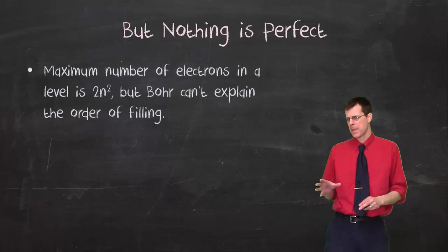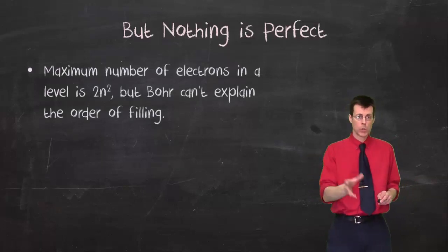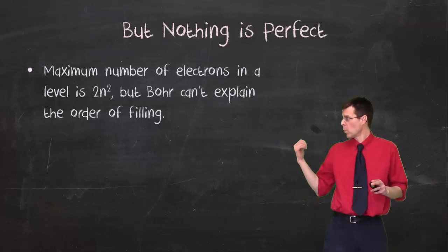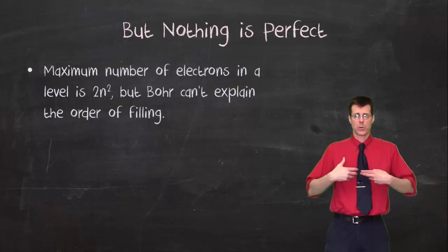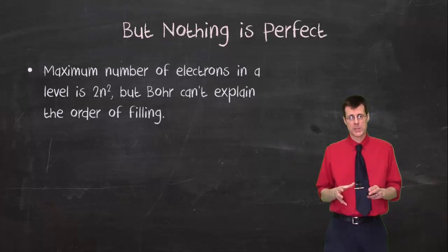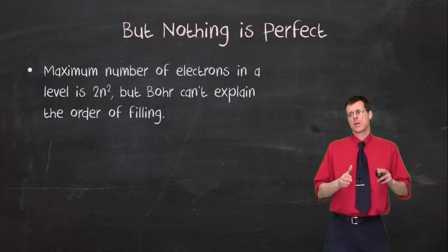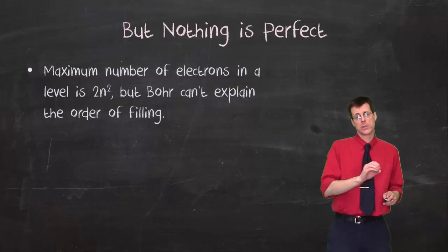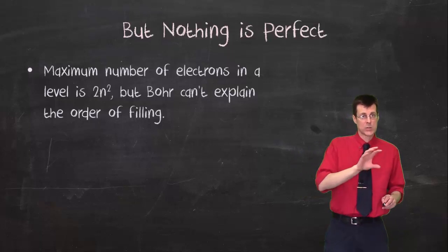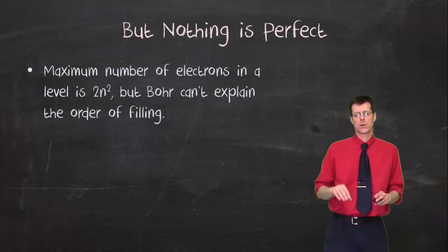Now, the thing about Bohr's theory is that it worked for certain atoms, or we were able to use it for certain atoms. One of the things that we knew about Bohr theory is this idea that in an orbit, there's a maximum number of electrons. It's 2n squared, where n is the orbit number. The problem was the order of fill. So particularly when you get from elements number 17, 18, 19, 20, to 21, things kind of fell apart.